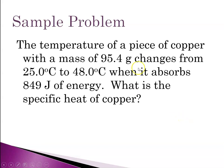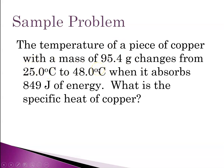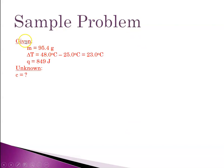Let's look at a sample problem. The temperature of a piece of copper with a mass of 95.4 grams changes from 25.0°C to 48.0°C when it absorbs 849 joules of energy. What is the specific heat of copper? Using the ACE method: we're asked to solve for specific heat, which is variable c. Our equation is q = mcΔT. The mass, temperatures T1 and T2, and joules of energy absorbed are all given.